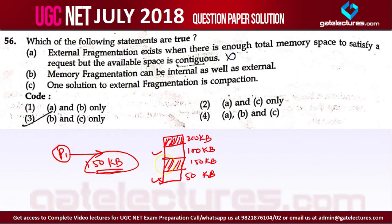We have a solution for external fragmentation and that is compaction. In compaction, we move the occupied areas to one side and combine the unoccupied areas together, so we can then allocate contiguous space. So Statement A is false as stated.